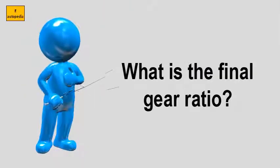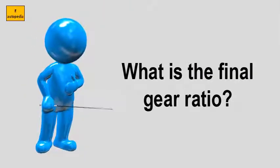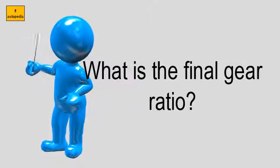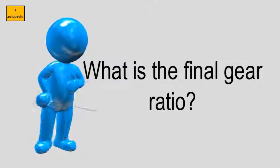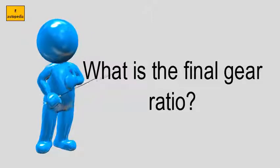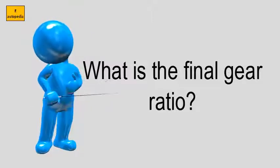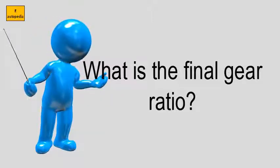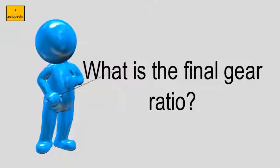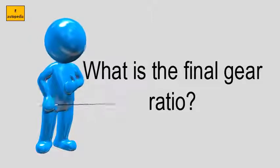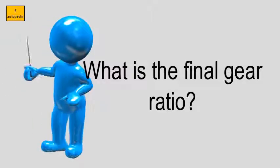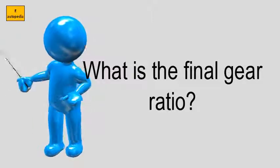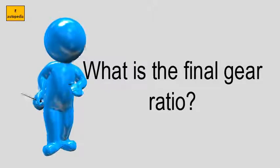What is the final gear ratio? It is the ratio of the drive shaft, or transmission output shaft, to rear wheel revolutions. 3.5 revolutions of the drive shaft for each revolution of the wheel equals a 3.5:1 final drive ratio.